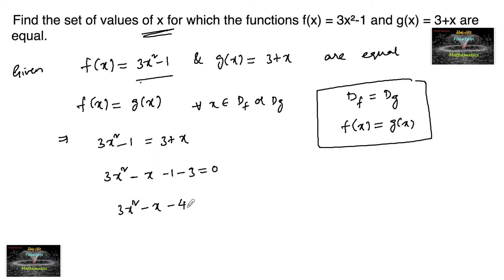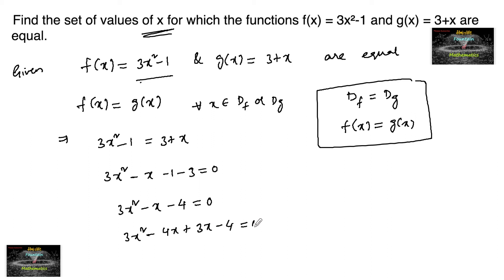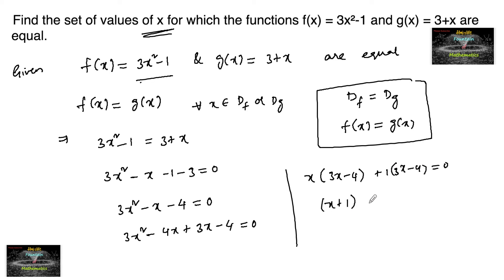By factorization, we can write 3x² - 4x + 3x - 4 = 0. Taking x common from the first two terms gives x(3x - 4), and factoring the last two terms gives 1(3x - 4), so the equation becomes (x + 1)(3x - 4) = 0.